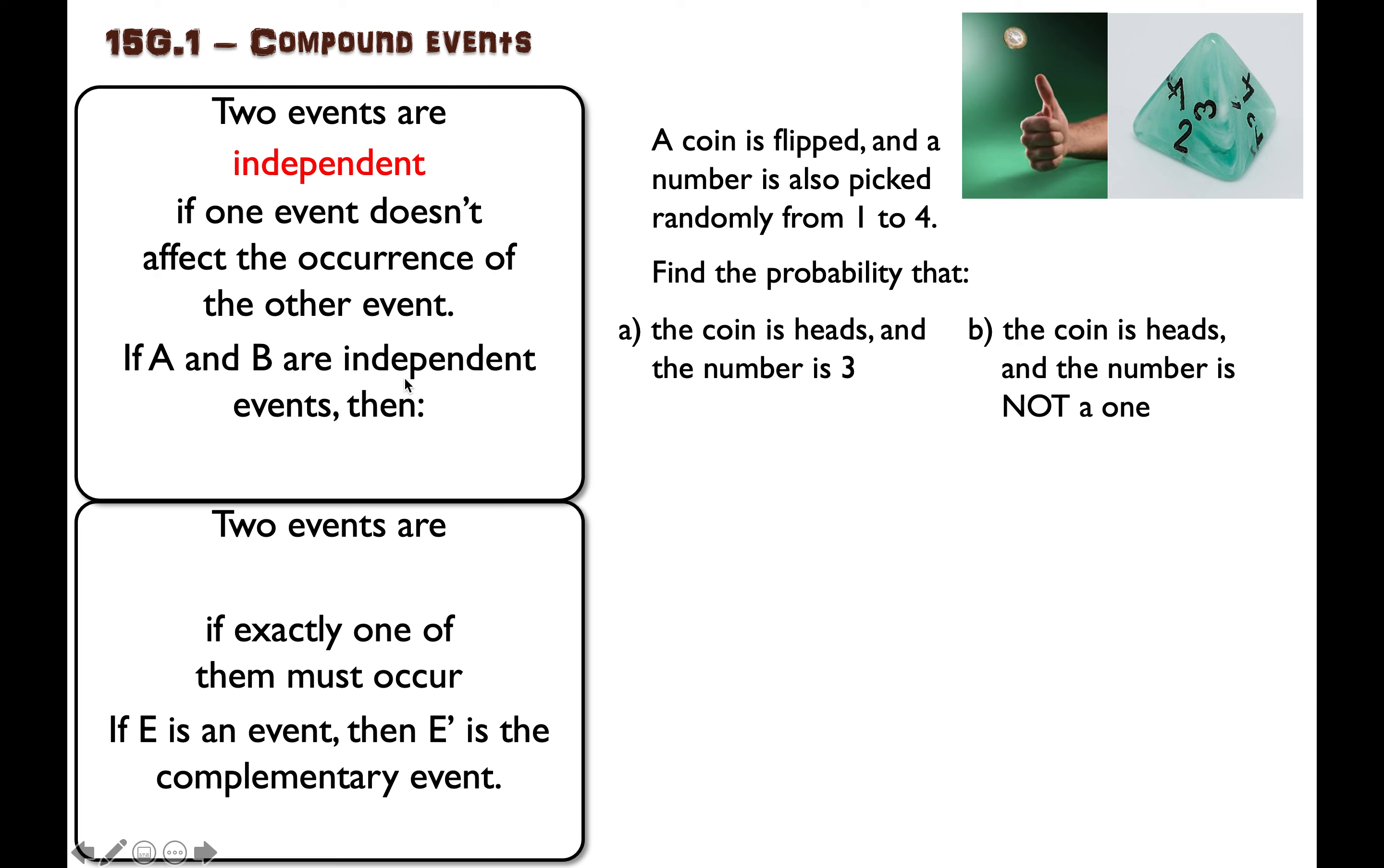It happens that if we have two independent events, let's call them A and B, then the probability of A happening and also B happening is the probability of A multiplied by the probability of B. Just multiply them together and we'll see an example over here.